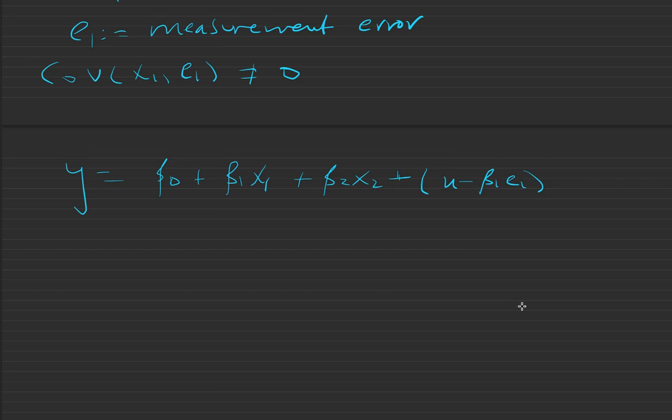If we have all other assumptions met, that is, u is uncorrelated with x1, x2, x1 star, and e1 is uncorrelated with x1 star and x2.